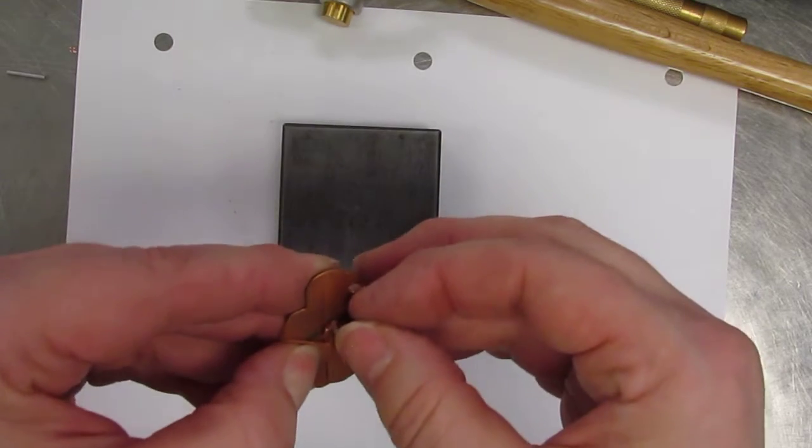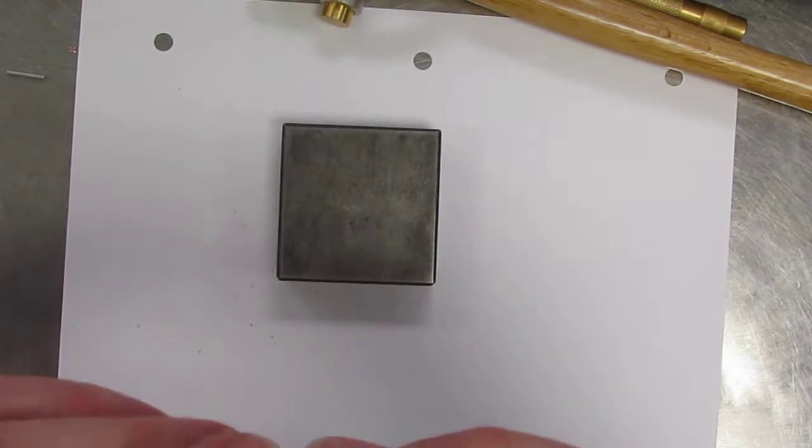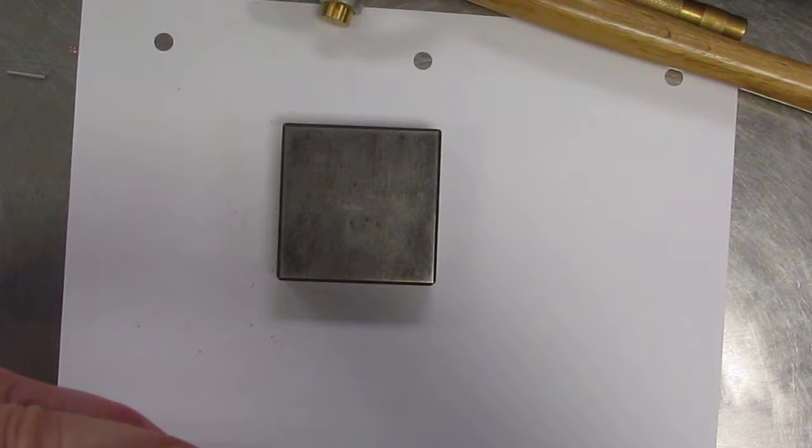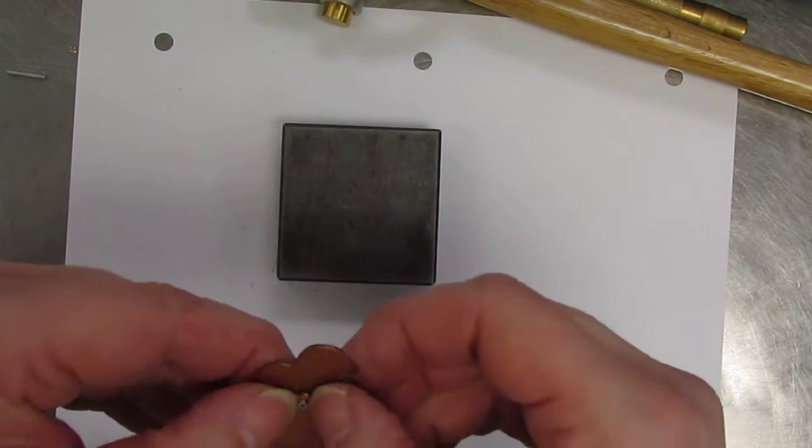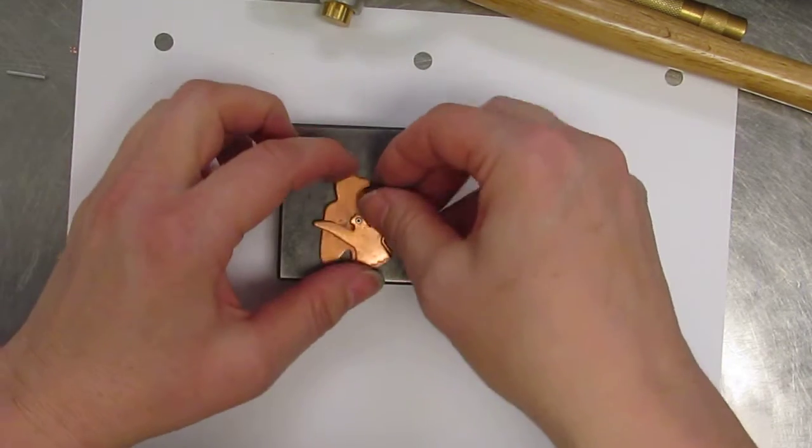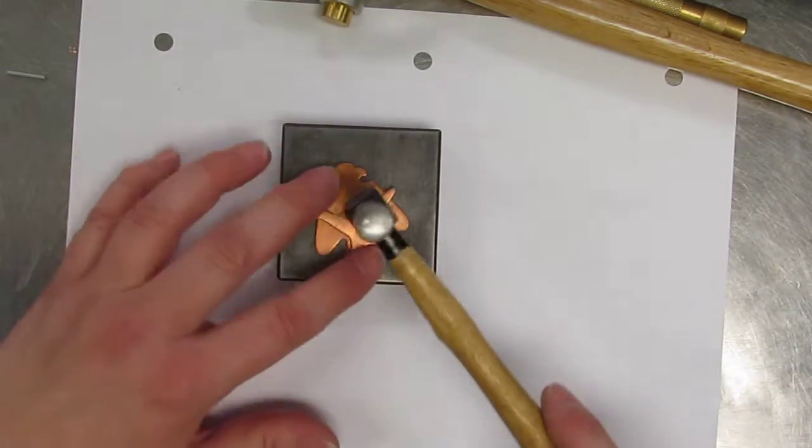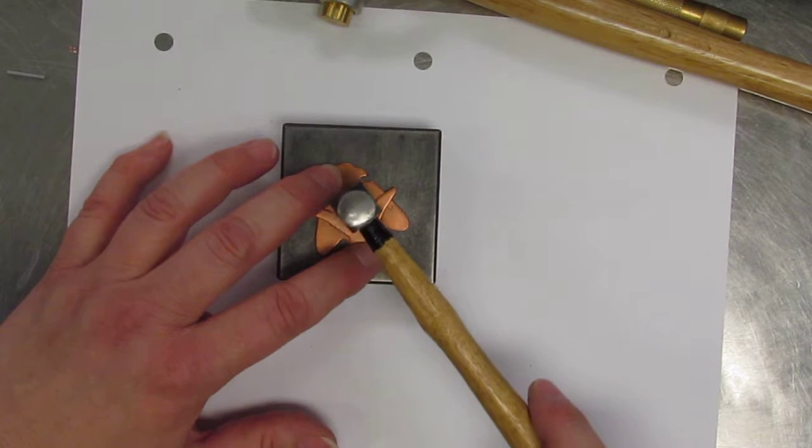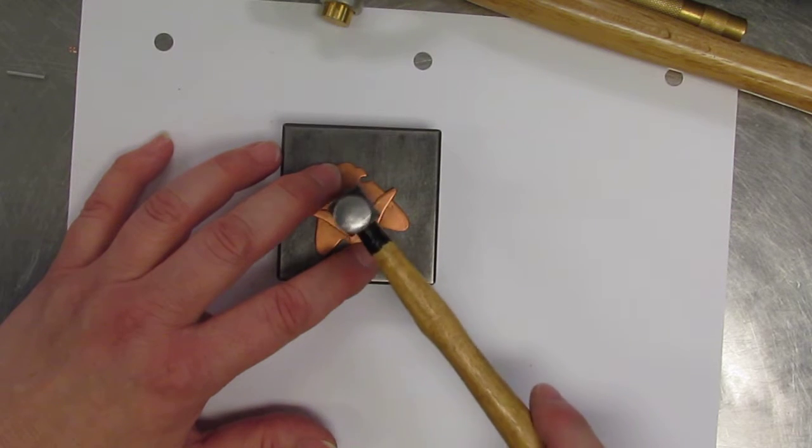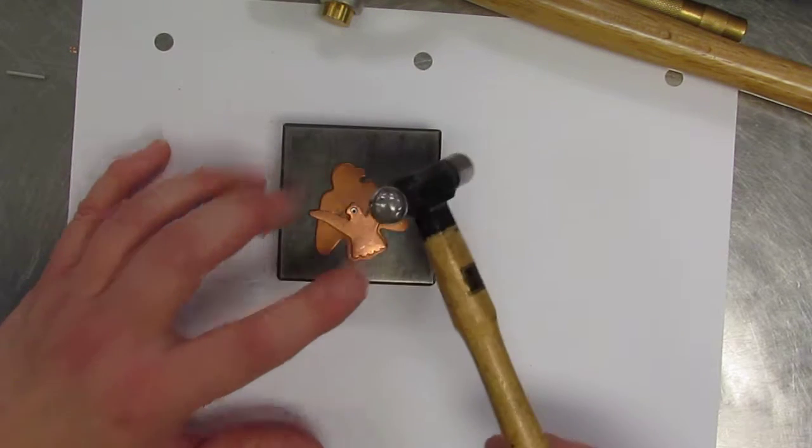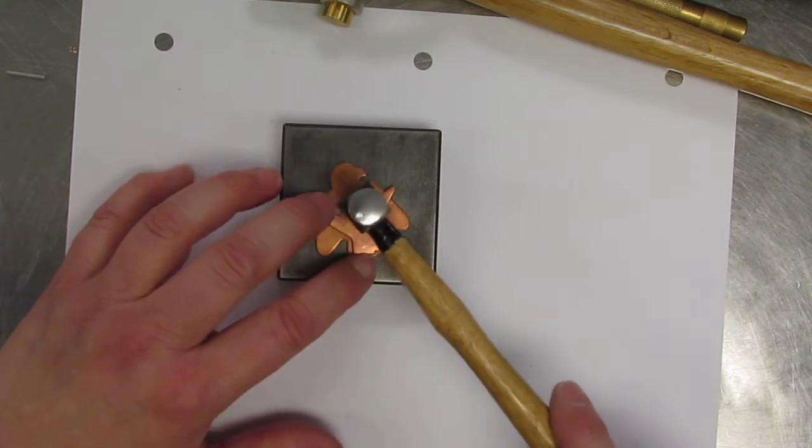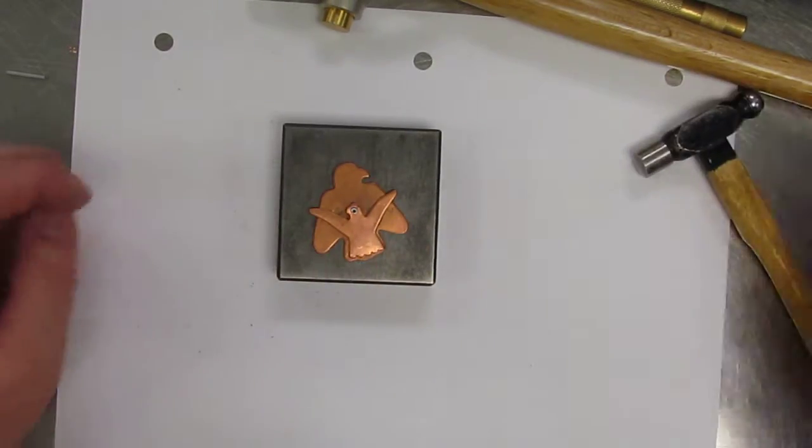And that rivet piece needs to go through both of those holes. And it should stick out about halfway onto the other side. And there's a couple different ways that you can start that. One way is to actually take the little tiny ball peen hammer and just very gently start that flare. So the round part of that can go over. You can also sometimes take the setting tool.